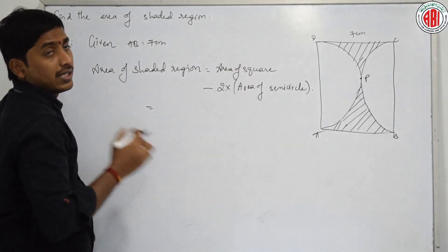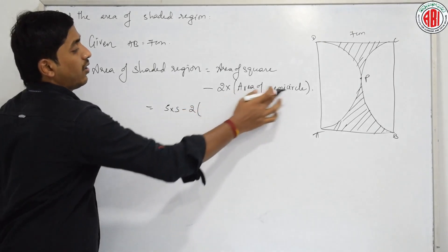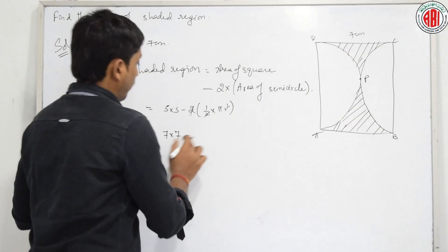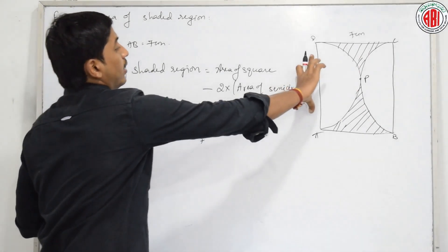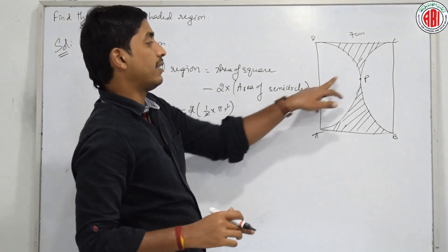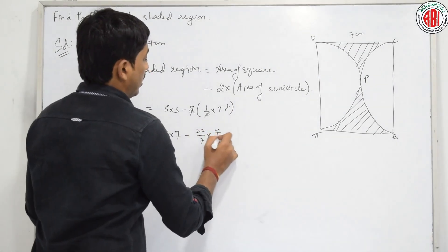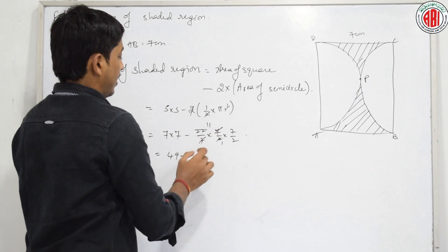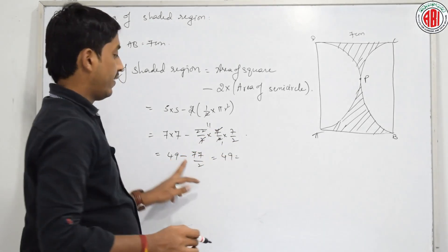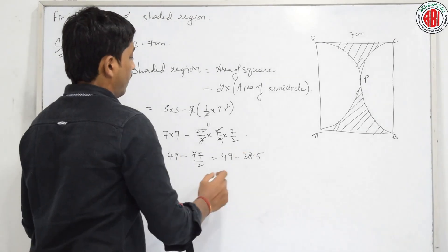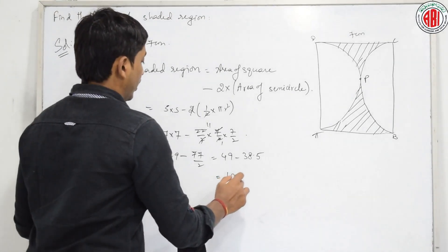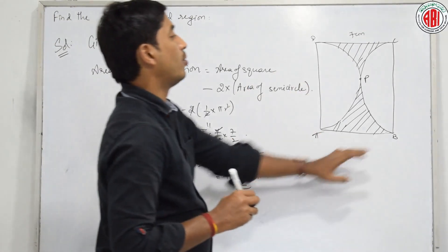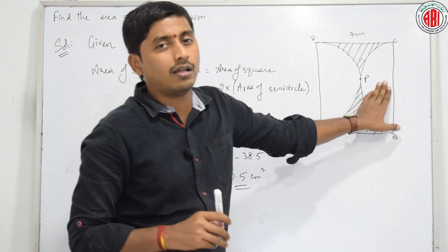What is the side of the square? 7 into 7, minus 22 by 7 into radius 7 by 2 into 7 by 2. The 7s cancel. That gives 49 minus 7 into 11 is 77 by 2, which is 38.5. So 49 minus 38.5 equals 10.5 centimetre square. From the whole square, we have separated these two semicircles.